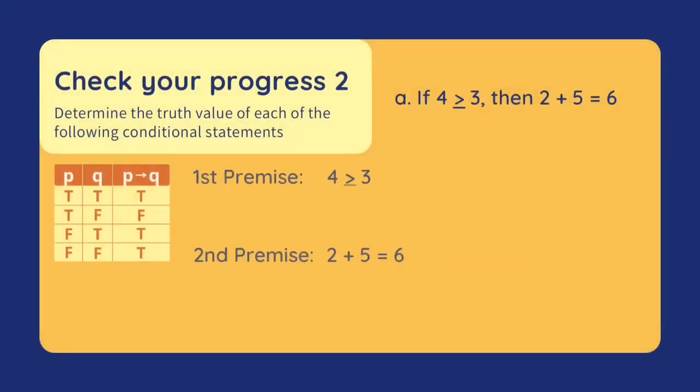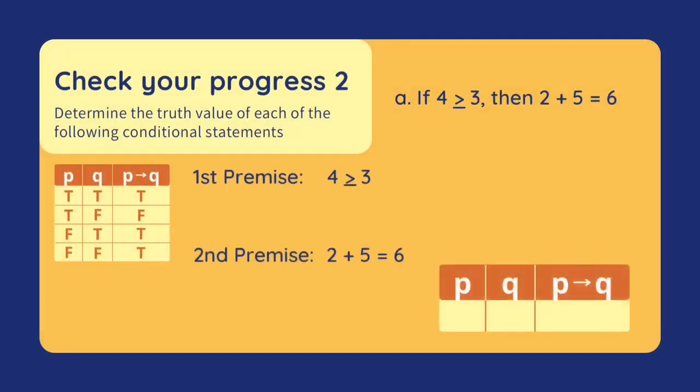Let's check our progress. Determine the truth value of each of the following conditional statements. Letter A: If 4 is greater than or equal to 3, then 2 plus 5 equals 6.